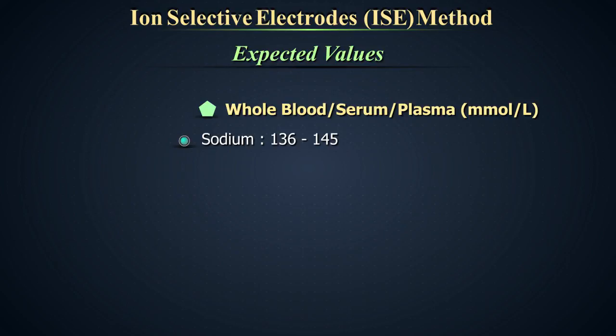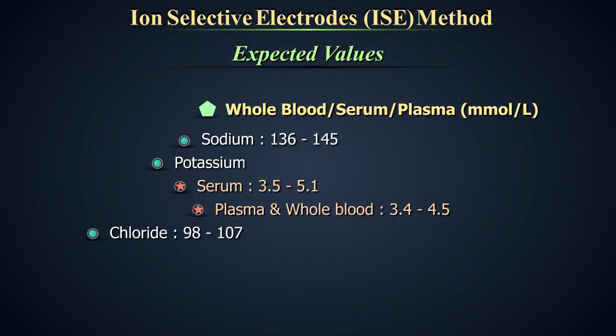Sodium, 136 to 146 millimoles per liter. Potassium, 3.5 to 5.1 millimoles per liter in serum and 3.4 to 4.5 millimoles per liter in plasma and whole blood. Chloride, 98 to 106 millimoles per liter.